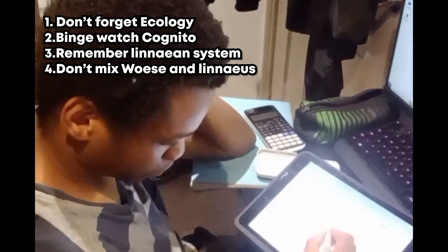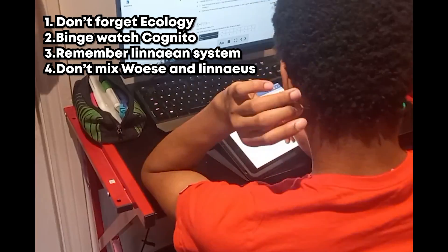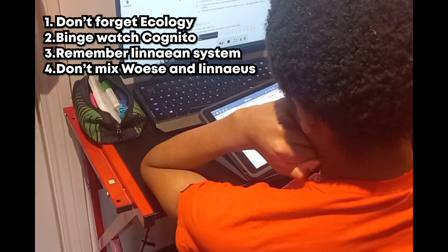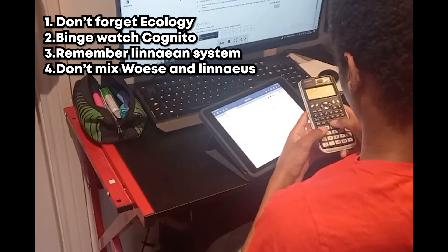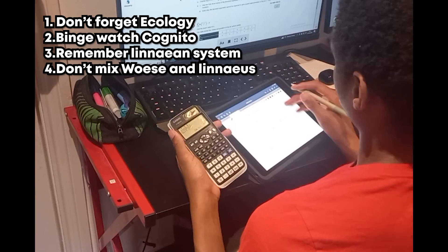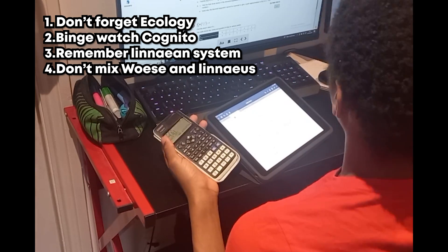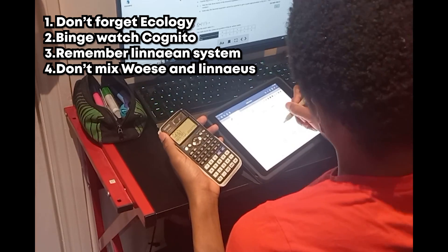My fourth tip is to try not to mix up Carl Woess, I think is how you pronounce it, and Carl Linnaeus. Woess made the three domain system and Linnaeus obviously made the Linnaean system, and they may ask you to talk about one of them or say the difference between them. They are not the same person and you shouldn't mix them up or you will lose all your marks.